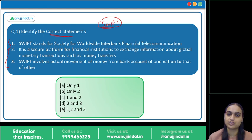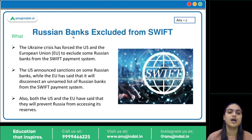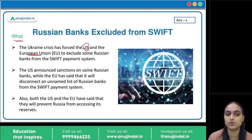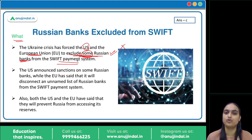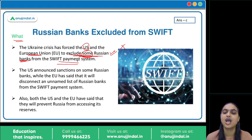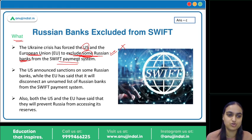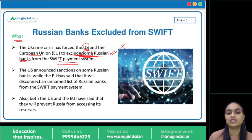The news is that the Ukraine crisis has forced the US and European Union to exclude some Russian banks — only some, not all as of now — from the SWIFT payment system. The US has announced sanctions on some Russian banks, while the EU has not yet named the list of Russian banks it will exclude.